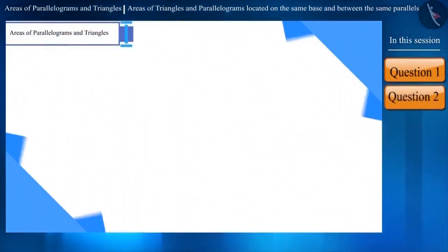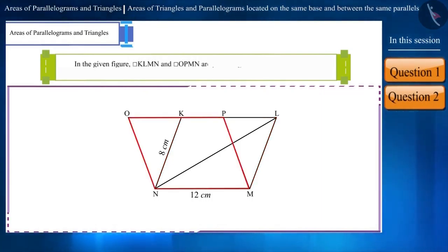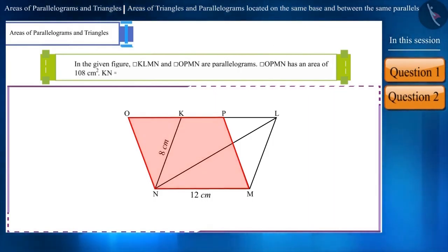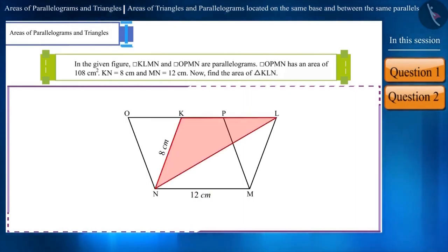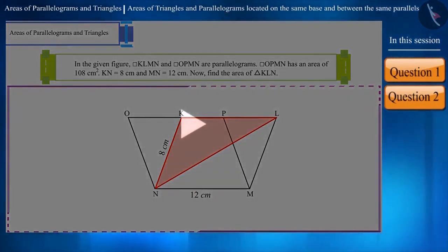Now let's look at another question. In the given figure, quadrilateral KLMN and quadrilateral OPMN are parallelograms. Quadrilateral OPMN has an area of 108 cm². The length of sides KN and MN is 8 cm and 12 cm respectively. Find the area of triangle KLN. Pause the video and try to find the answer yourself.